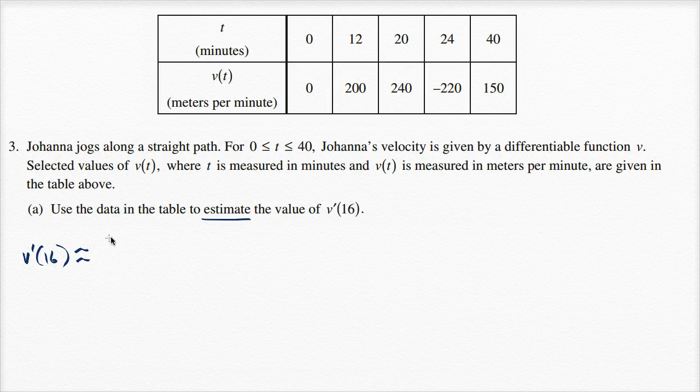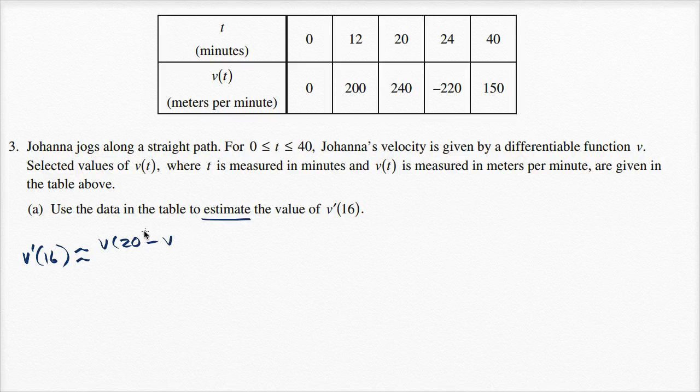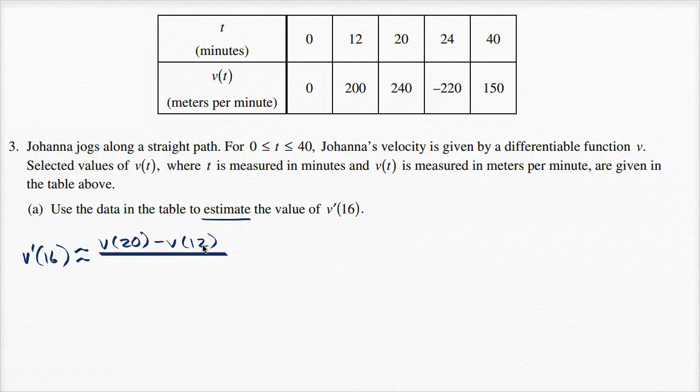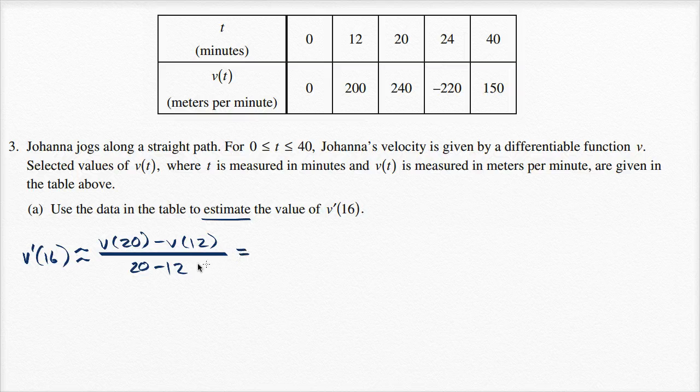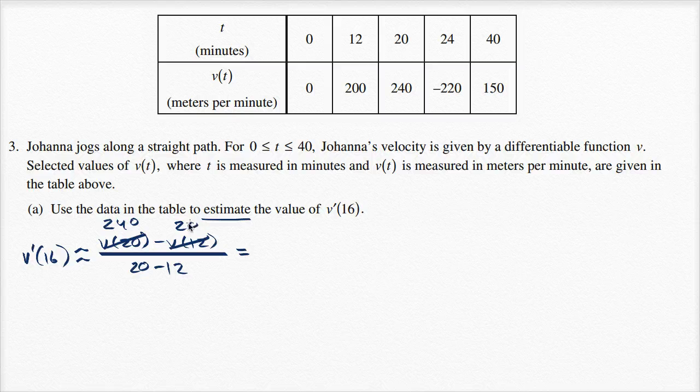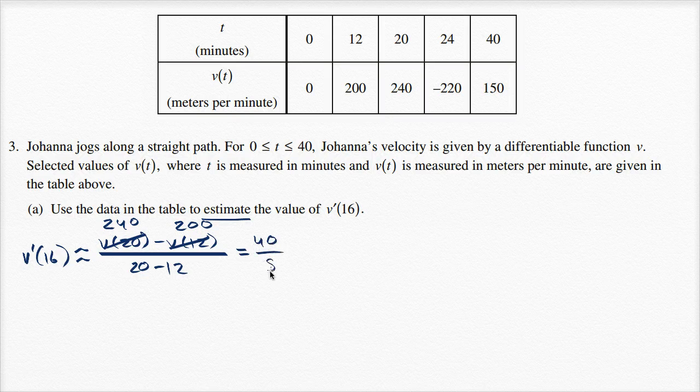So our change in velocity, that's going to be v of 20 minus v of 12. And then our change in time is going to be 20 minus 12. And so this is going to be equal to, v of 20 is 240, v of 12, we see right there, is 200. And so this is going to be 40 over 8, which is equal to 5.